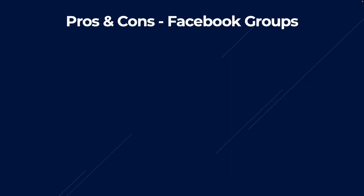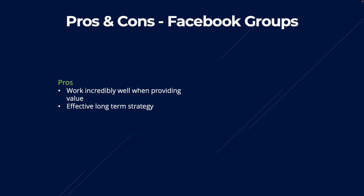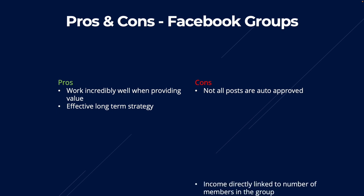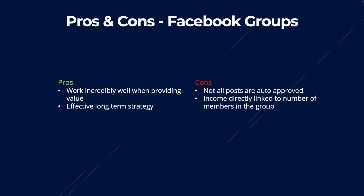So what are the pros and cons of Facebook groups? Well, as I said, it's pretty similar to forums, so the pros and cons are also very similar. They work incredibly well when providing value, and it's an effective long-term strategy. The cons: not all posts are auto-approved — some posts need approval from the moderators of that Facebook group, and if they don't like the look of your post or see an affiliate link, that can be a problem. And of course, the income is directly linked to the number of members in the group. If you join a really niche-specific group with only 100 members, your income is going to be limited.